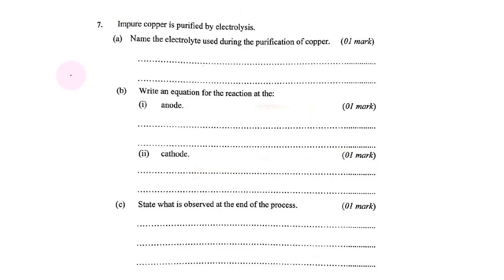Hello, let's now look at question 7. Impure copper is purified using electrolysis. Name the electrolyte used during the purification of copper.